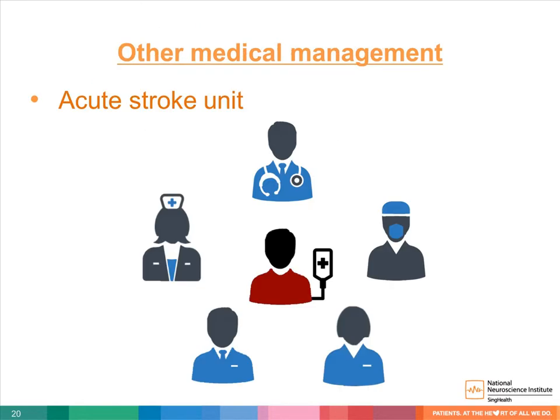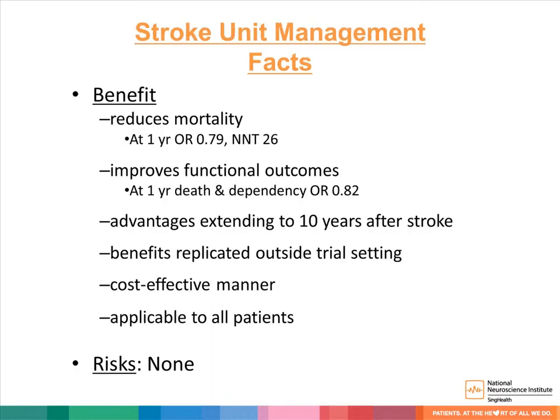The mainstay of stroke management beyond reperfusion treatment is care in an acute stroke unit, defined as geographically locating stroke patients in the same area under the care of a team of professionals trained in stroke care. This is a very strong intervention — it saves lives. Stroke unit care reduces mortality with a number needed to treat of 26, and also improves functional outcome. This intervention is cost-effective, has no risk, and is applicable to all patients.